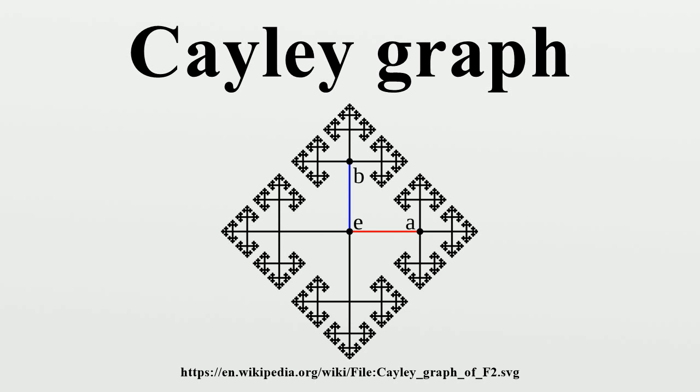Schreier-Coset graph. If one, instead, takes the vertices to be right cosets of a fixed subgroup, one obtains a related construction, the Schreier-Coset graph, which is at the basis of coset enumeration or the Todd-Coxeter process.